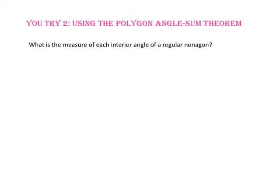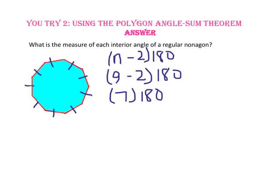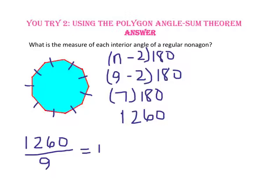Pause the video and do you try number 2. What is the measure of each interior angle of a regular nonagon? We know that a nonagon has 9 sides and that all sides and angles are congruent in a regular polygon. Using the polygon angle sum theorem formula with n equals 9: 9 minus 2 is 7, and 7 times 180 is 1,260. Since each angle is congruent, we divide 1,260 by 9, which gives us 140 degrees for each interior angle measure.